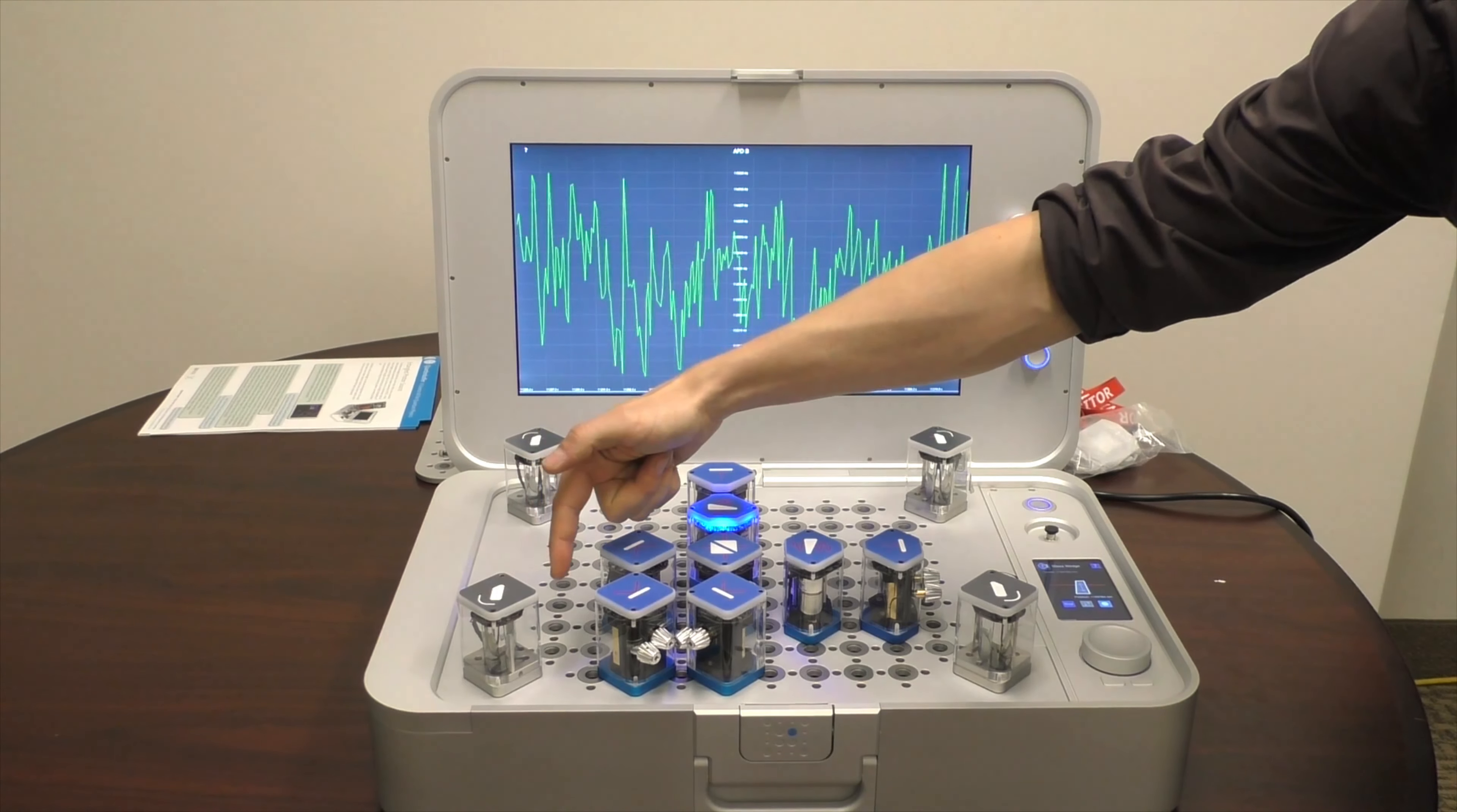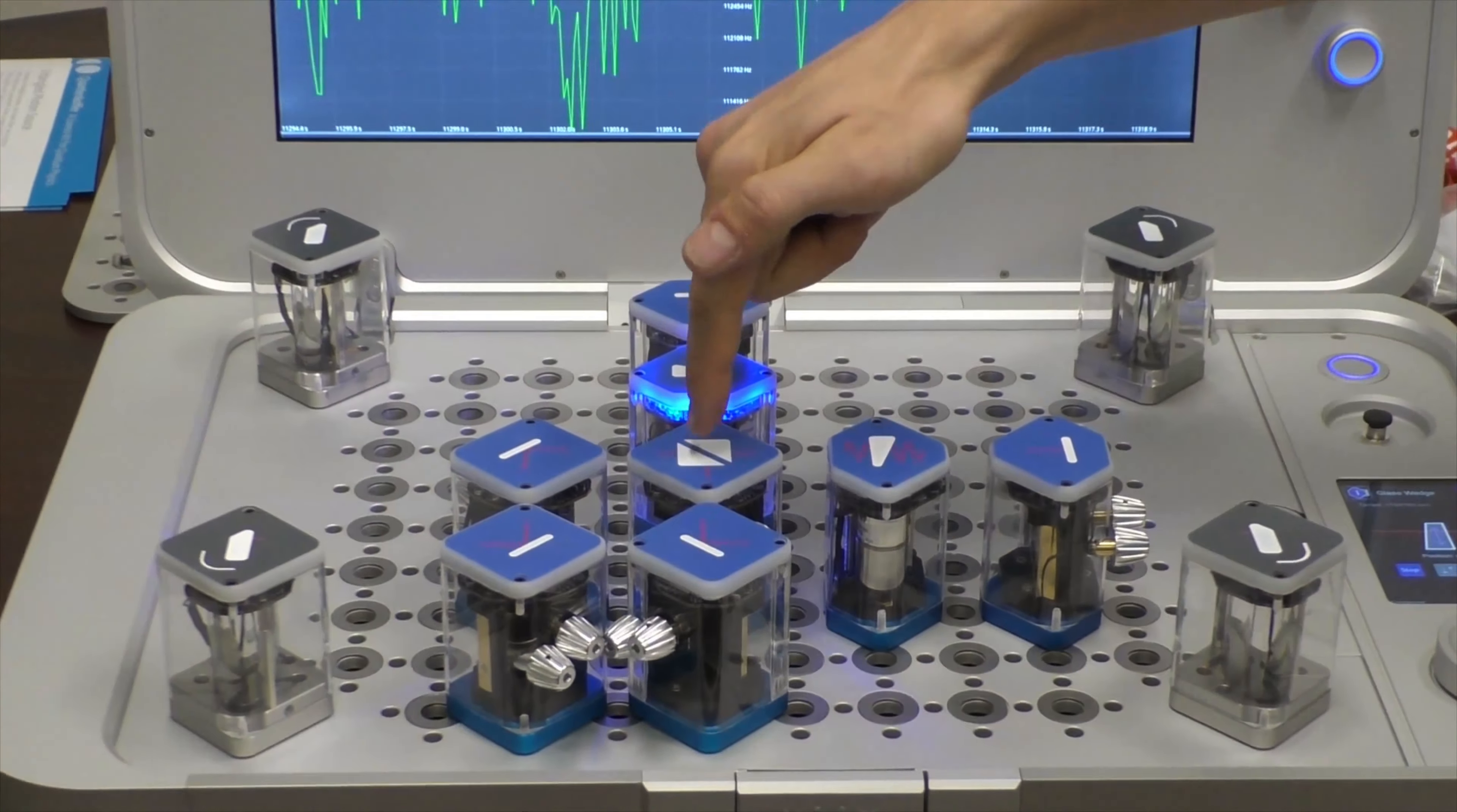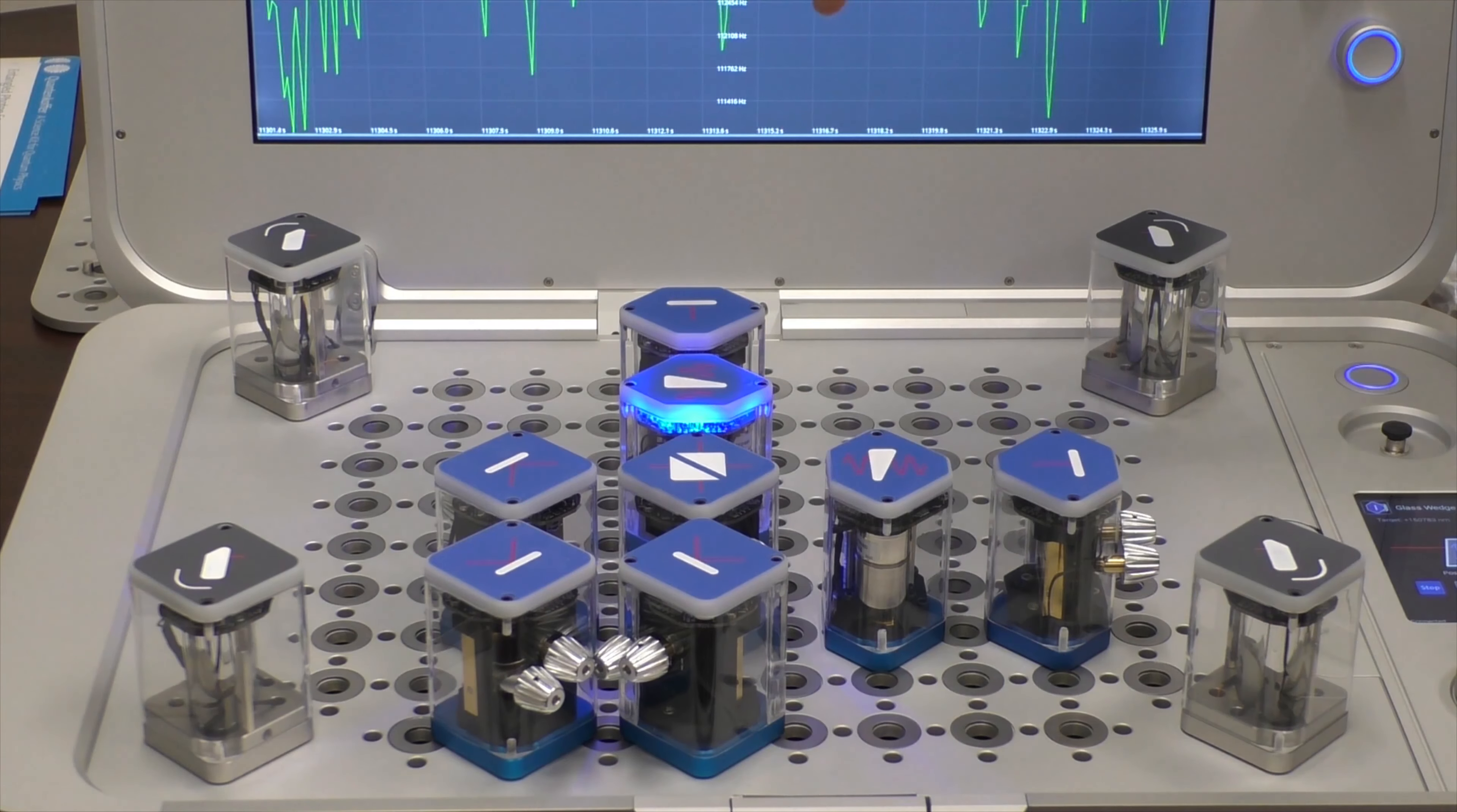So they come out on this side, hit two mirrors just so they can be transformed onto this beam splitter over here, which is the first part of the Michelson interferometer. From here they can either go this way, this path, or this path.